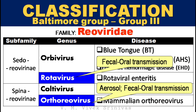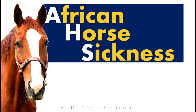The diseases under the genus Orbivirus and Coltivirus are arthropod-borne viral diseases. The diseases under the genus Rotavirus and Orthoreovirus are non-arthropod-borne viral diseases, transmitted through fecal-oral route transmission. In this lecture we will discuss in detail on African Horse Sickness.